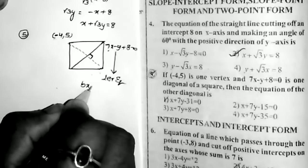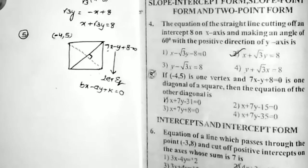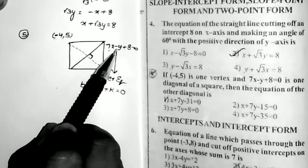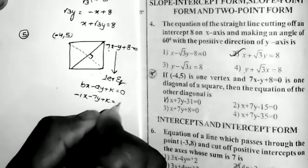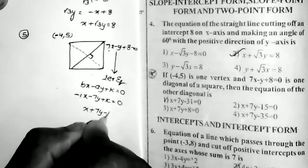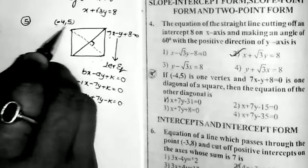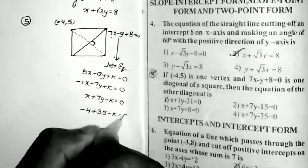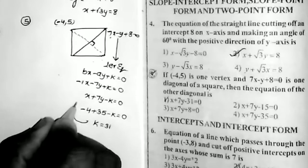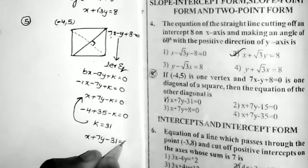The perpendicular line formula for Ax + By + C = 0 is Bx − Ay + K = 0. Here A = 7, B = −4. So the perpendicular line is −4x − 7y + K = 0, or equivalently x + 7y − K = 0. Replacing the point (−4, 5): −4 + 35 − K = 0, so K = 31. Therefore the equation of the second diagonal is x + 7y − 31 = 0.